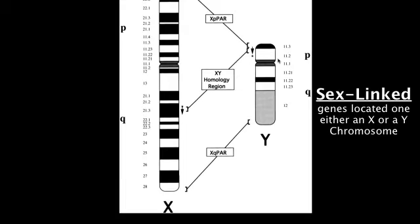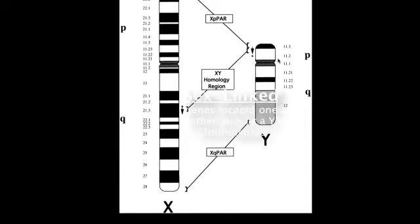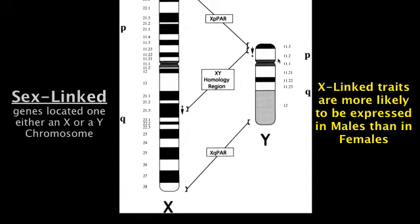The X chromosome has around 1100 genes that are exclusively X-linked. Most of these genes have nothing to do with gender — they simply code for proteins just like most genes on autosomes. These differences in the X and Y chromosome genes can give some interesting inheritance patterns that are not seen in the autosomes.